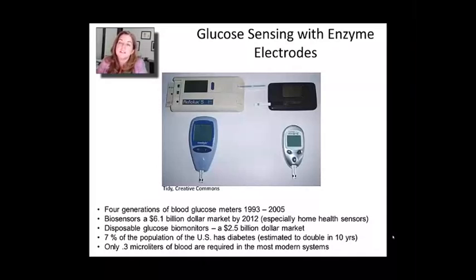Glucose sensing is an example that can be either potentiometric or amperometric. The basic idea is measuring glucose in someone's blood. I'm counting it as a biological analyte because it's of biological significance—it's a big molecule, a sugar.